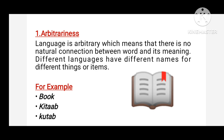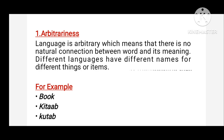Book is an English word. Isi book ko hum Urdu language mein 'kitab' kehte hain aur Arabic language mein 'kutab' kehte hain. So there is no natural connection between a word and its meaning, and this property of language is called arbitrariness.